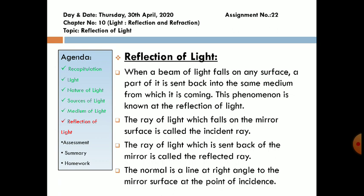Where incident ray is coming and from which point reflected ray is reflected back into the same medium, that is known as point of incidence. And a line which is 90 degree to this point of incidence, 90 degree to the plane mirror, is known as normal. Normal is an imaginary line.